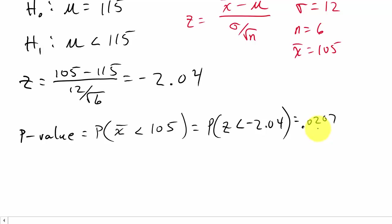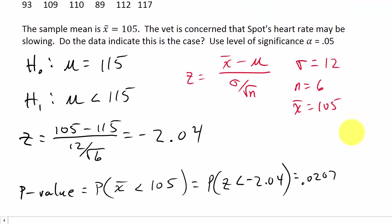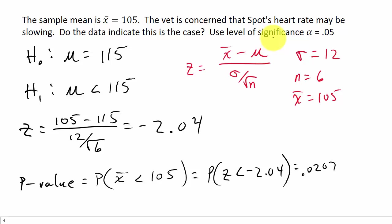Now we have to compare this to our alpha. They wanted us to use a level of significance alpha equals 0.05. And you can see that our p-value is less than 0.05.